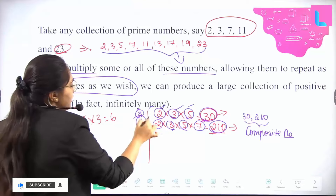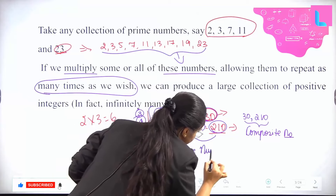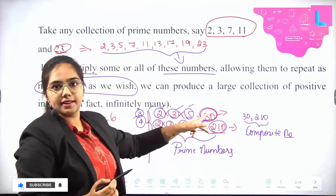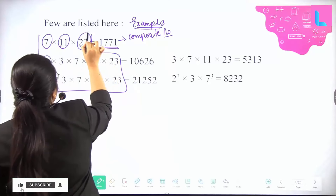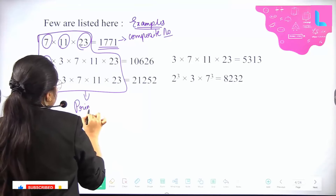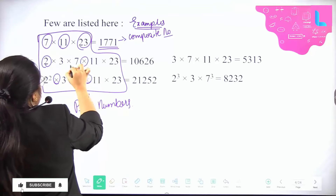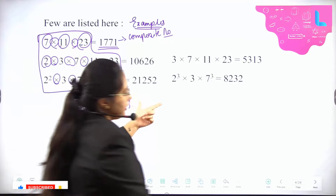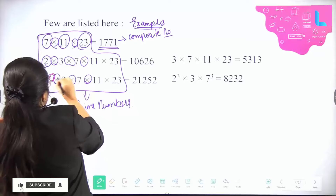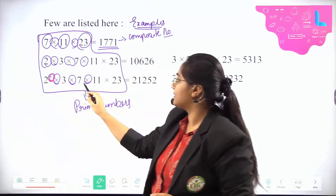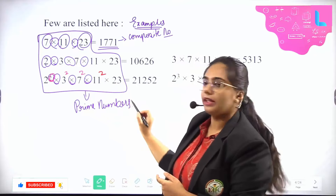In the previous slide, all those are prime numbers and the answers we get are composite numbers. The next thing to understand is: if we take any of these prime numbers and give them different powers — for example, 3², 7², 11² — you will get a different answer each time.